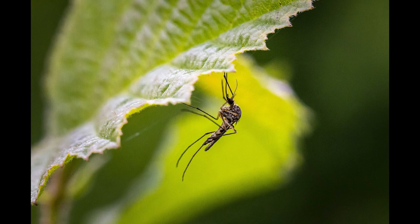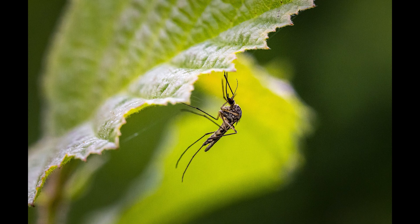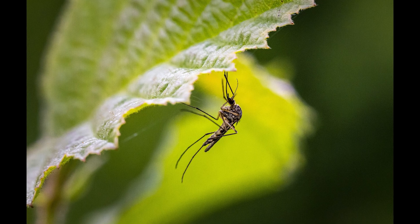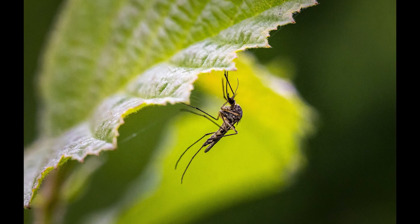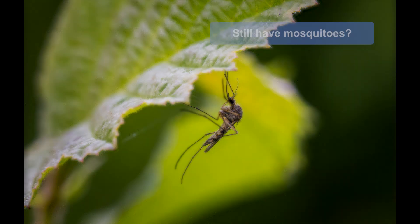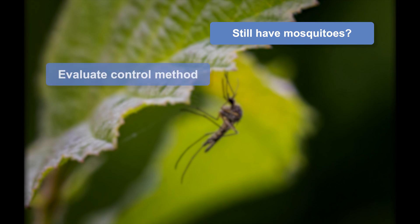For example, let's say that you are trying to control mosquitoes around your home. One step you may take is applying a pesticide. When following an IVM plan, after applying the pesticide, you should check to see if you still have mosquitoes, evaluate if the control method worked, and make changes if needed.